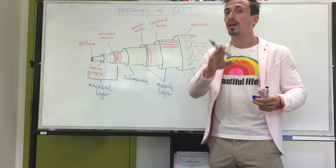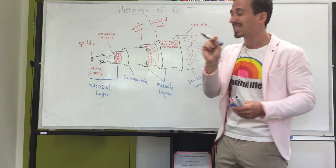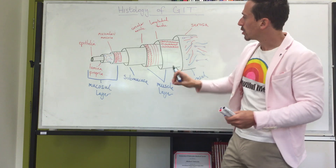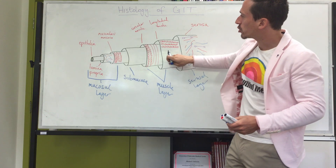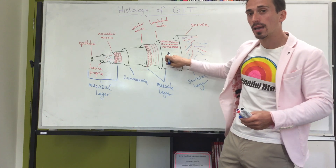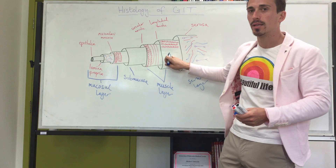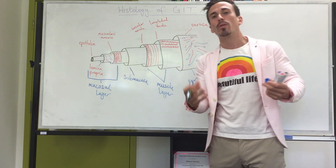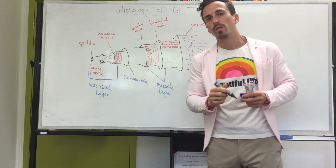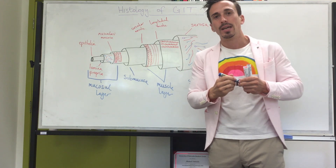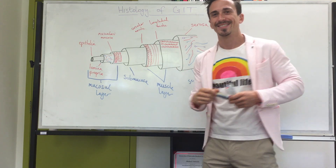These layers change depending on where you look. For example, in the stomach there is one extra muscle layer called the oblique layer — we'll discuss that when we move through into the stomach.